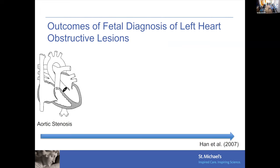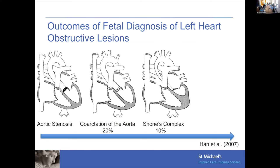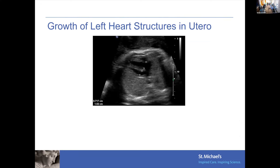The range of outcomes can span from aortic valve stenosis to development of coarctation of the aorta, to developing a Shone's complex with multiple levels of left ventricular outflow tract obstruction, to hypoplastic left heart syndrome. This was my project when I was an echo fellow at SickKids — looking at the outcomes of aortic valve stenosis in the fetus. How progression occurs varies depending on the impact of the different valve structures affected, but is not completely predictable.